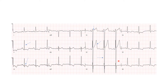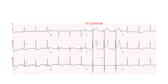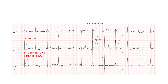Now, I have marked the points which need to be seen with arrows. You need to look at these arrows carefully — we can see ST elevation, tall T waves, tall R waves, as well as ST depressions and T wave inversions.